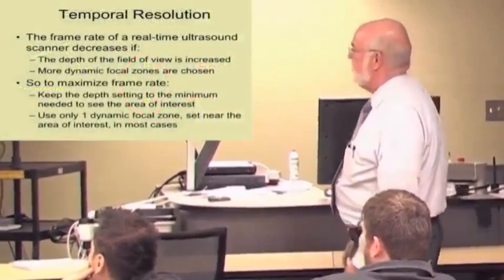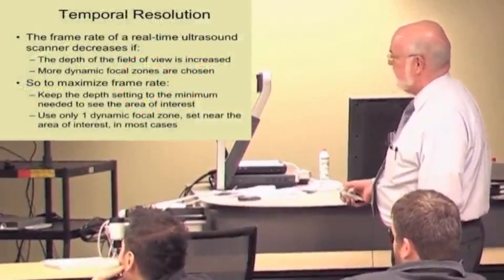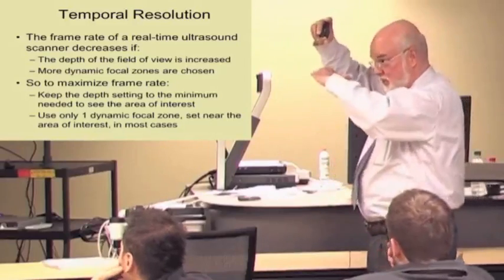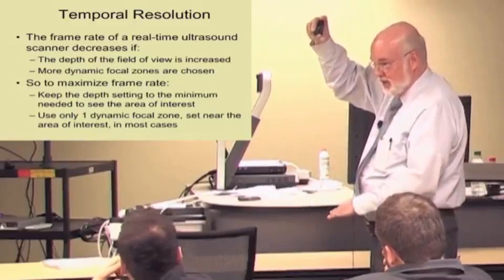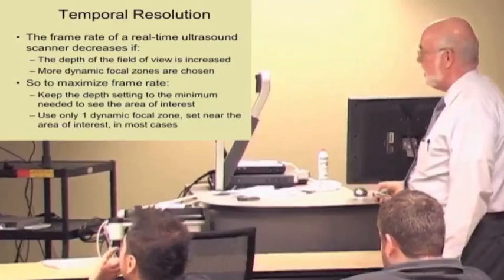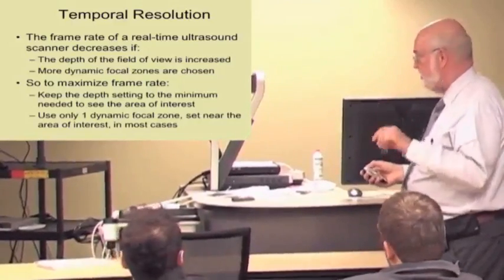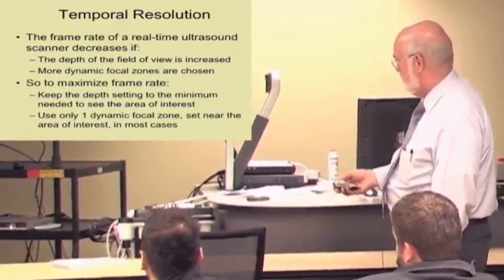Temporal resolution, well, that's just basically the frame rate. To maximize the frame rate, keep the depth setting to a minimum. If you're looking at something that's this deep in the body, you don't want your depth setting this deep because you're just wasting the computer's efforts. And the same thing is use only one dynamic focal zone if that will do the job, set to the area that you're really interested in instead of multiple ones because both of those things slow down the frame rate.